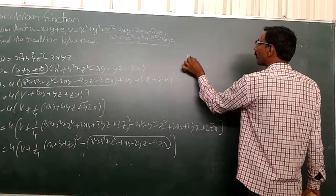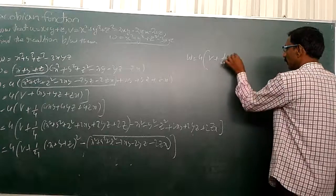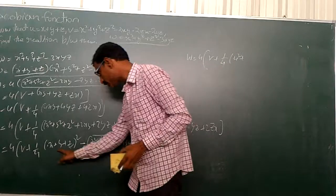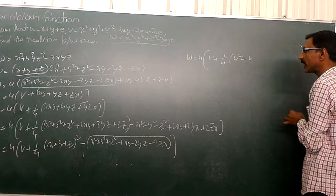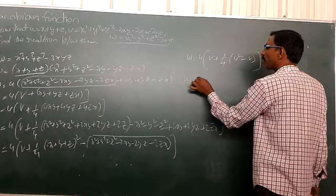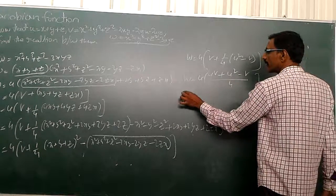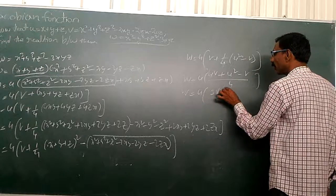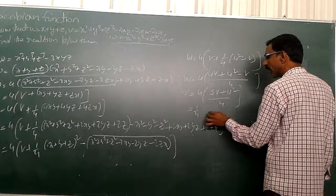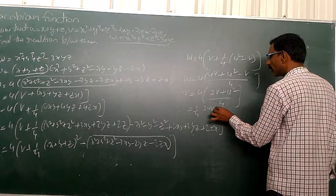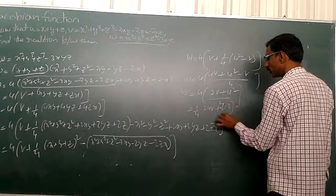So w is equal to u into v plus 1 by 4 into u square minus v. Now simplify with LCM 4: u into 4v plus u square minus v, all over 4. Then w is equal to u into 3v plus u square, all over 4. Multiplying out, we get 4w equals 3uv plus u cube. This is the relation: 4w equals 3uv plus u cube.